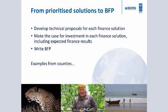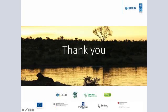Once you have your 5 to 15 prioritised finance solutions, you develop technical proposals for each — covering implementation approach, timelines, stakeholders, and making the case for investment through the business case, the biodiversity case, and expected finance results. You then write your biodiversity finance plan that captures these prioritised finance solutions for the country for the next 5 to 10 years. That is it for the broad methodology.